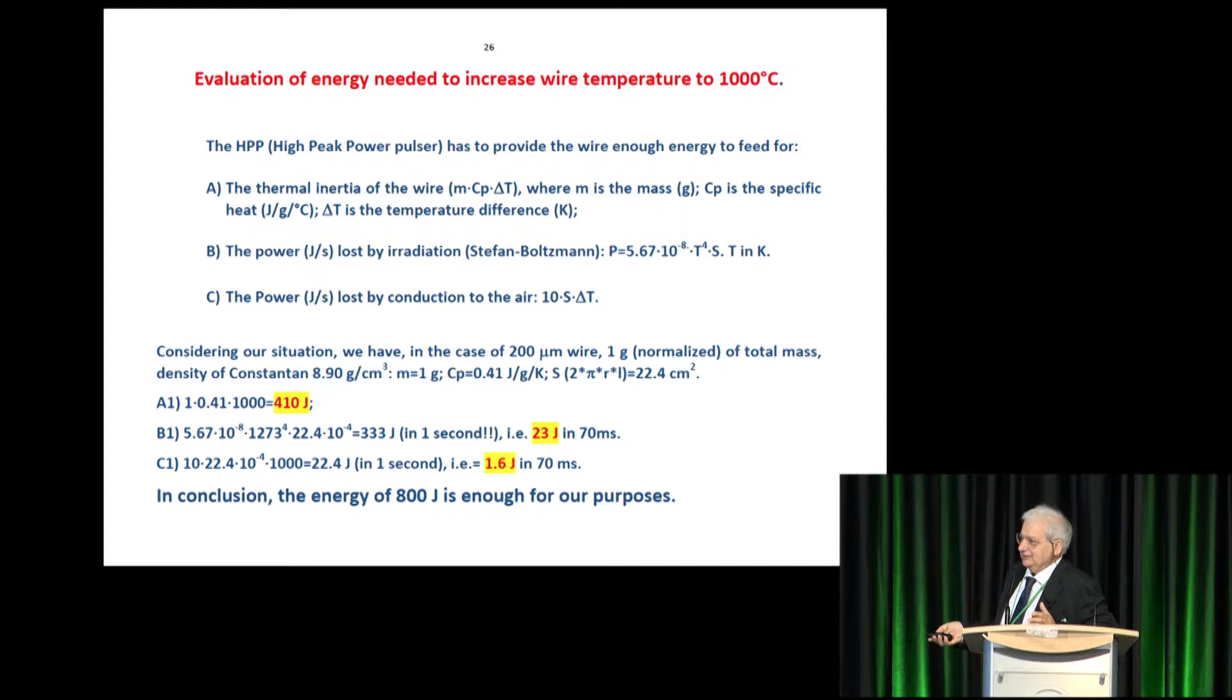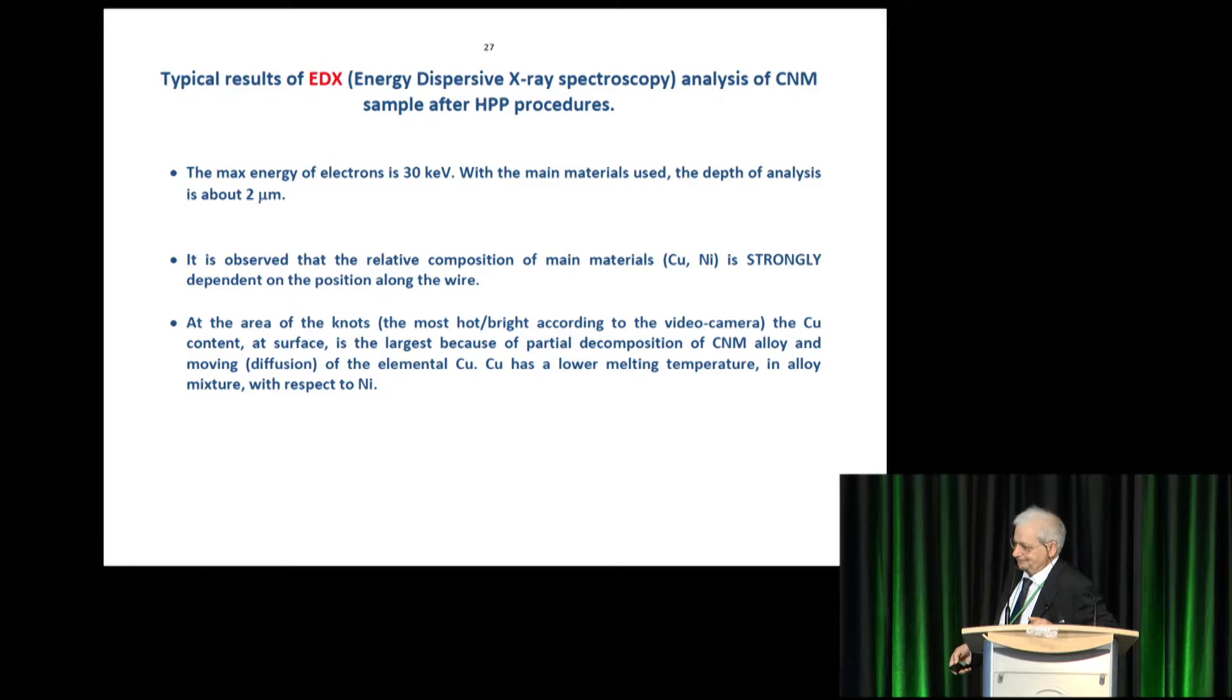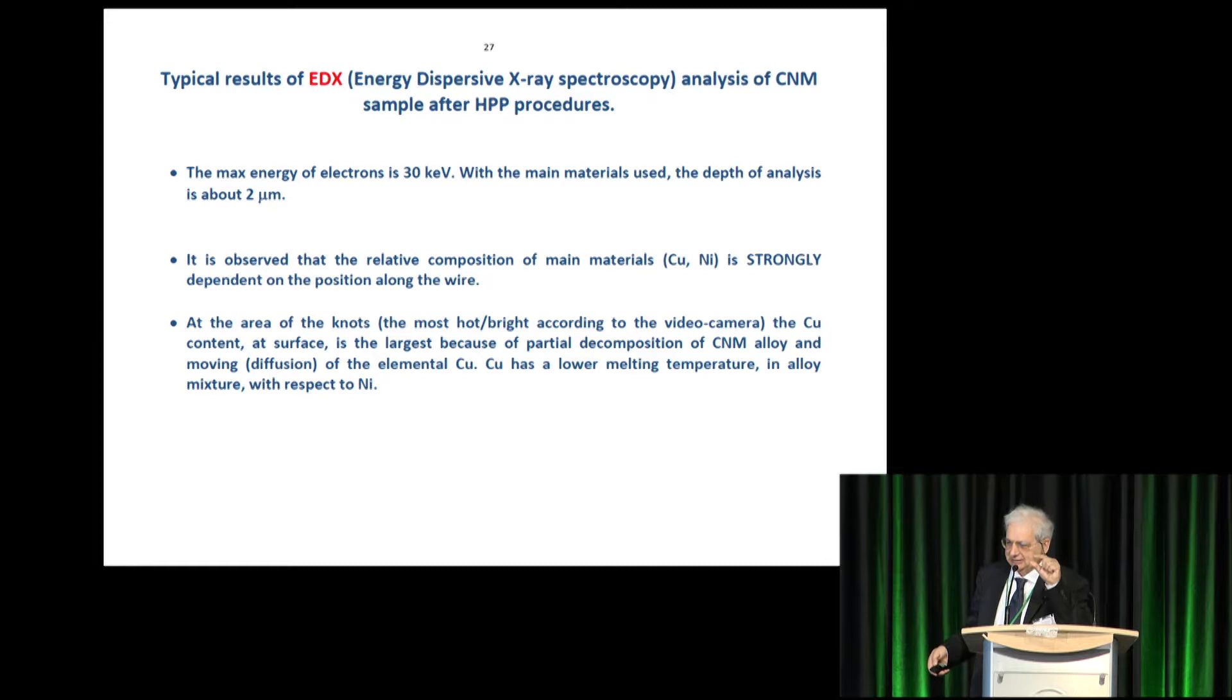So, the power is to have enough power to increase the temperature of the wire in a very, very short time. So, from calculation, we need about 450 joules. We have 800, so it's enough. Because there are several leakage uncontrolled. Moreover, we make some cross-check, if there is difference between the normal wire, not area, and regular.